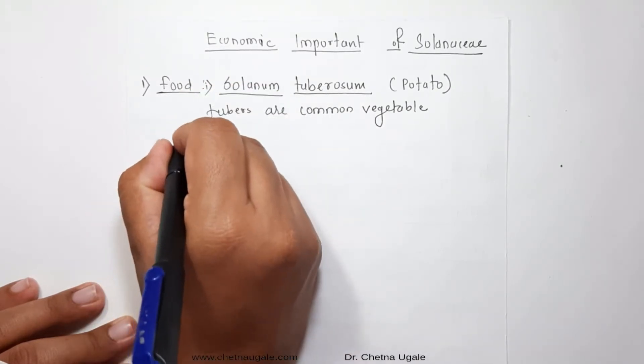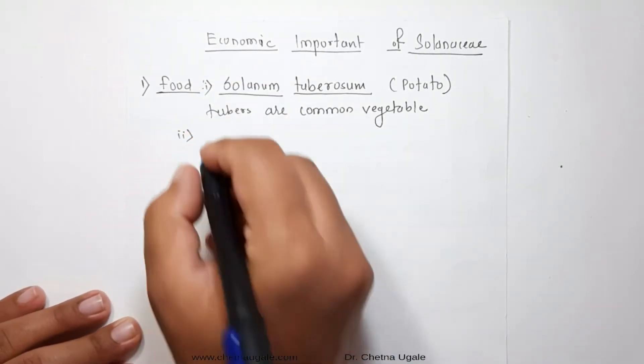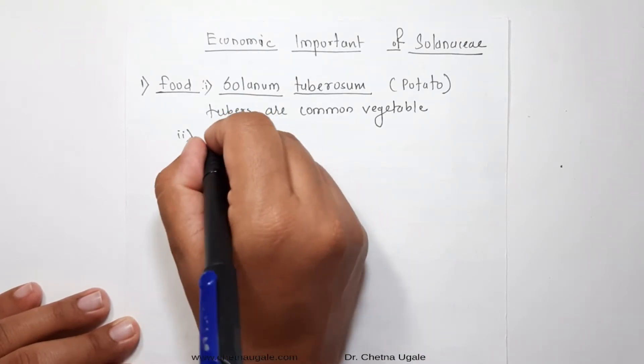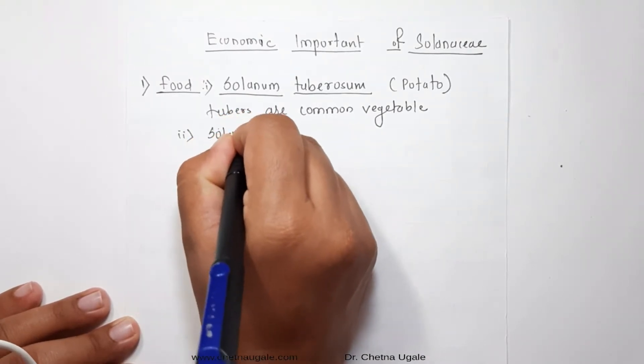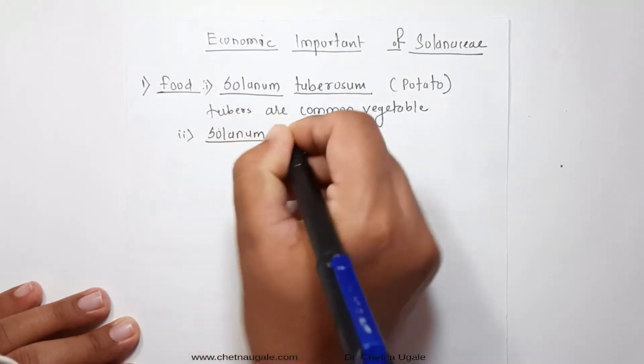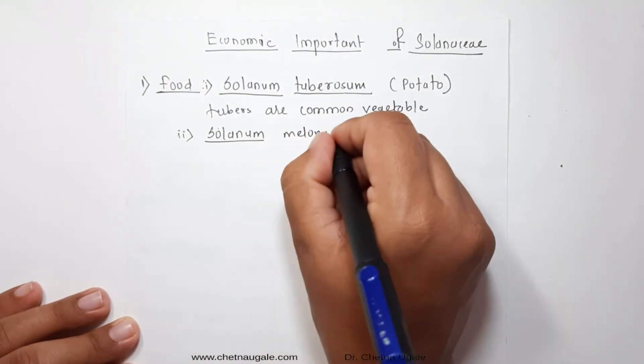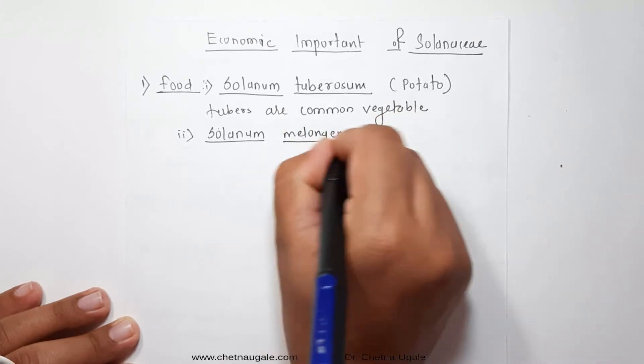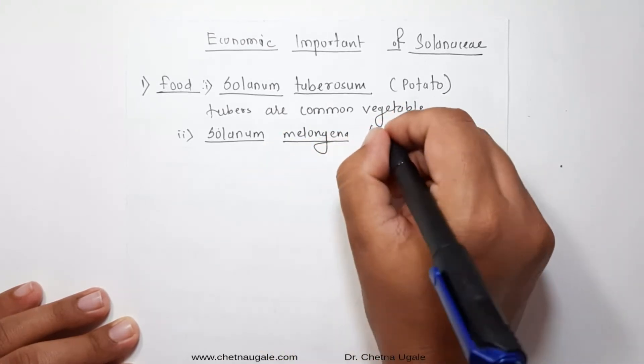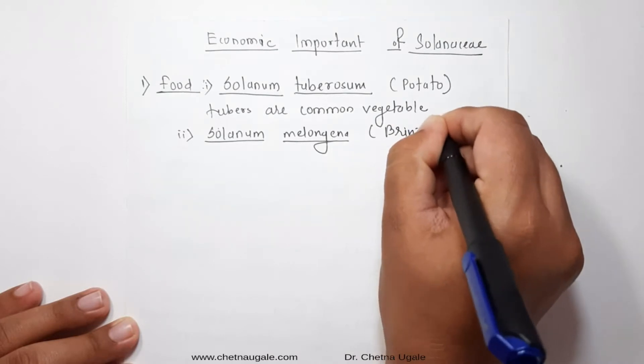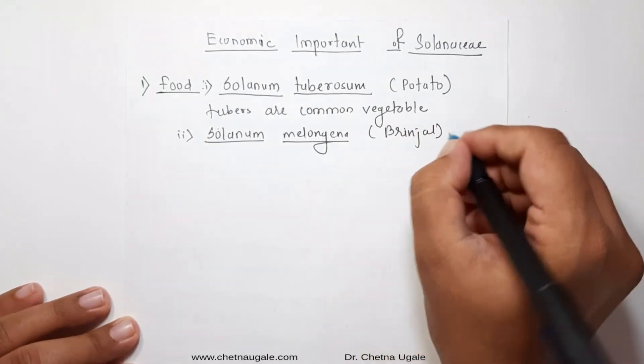The second one is Solanum melongena. Solanum melongena is commonly called as brinjal. Its tender fruits are used as vegetable.